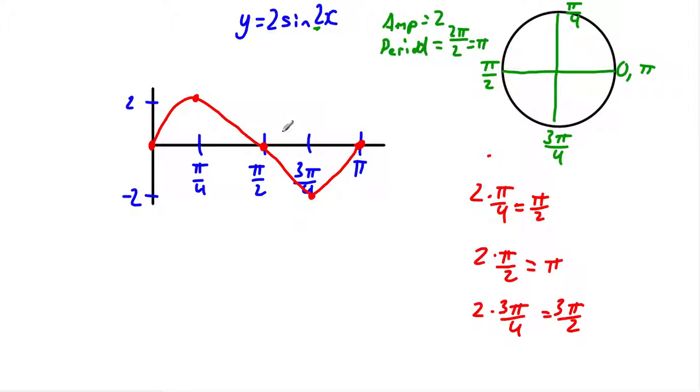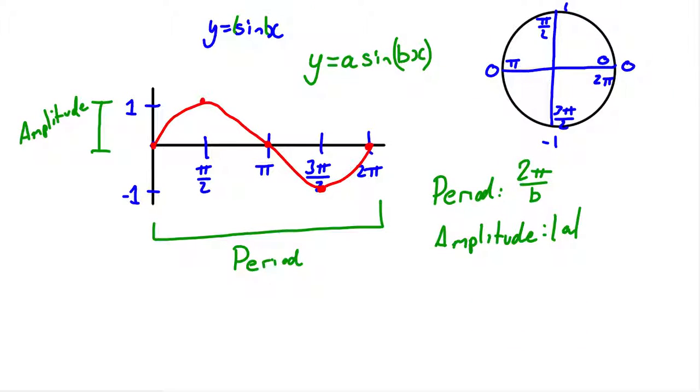So, the same thing can apply with cosine, and it works the exact same way. Of course, your graph will look a little bit different. So, this is your general formula. So, make sure you know it. And make sure you know how to find a and how to find b. Once you know that, graphing becomes simple.